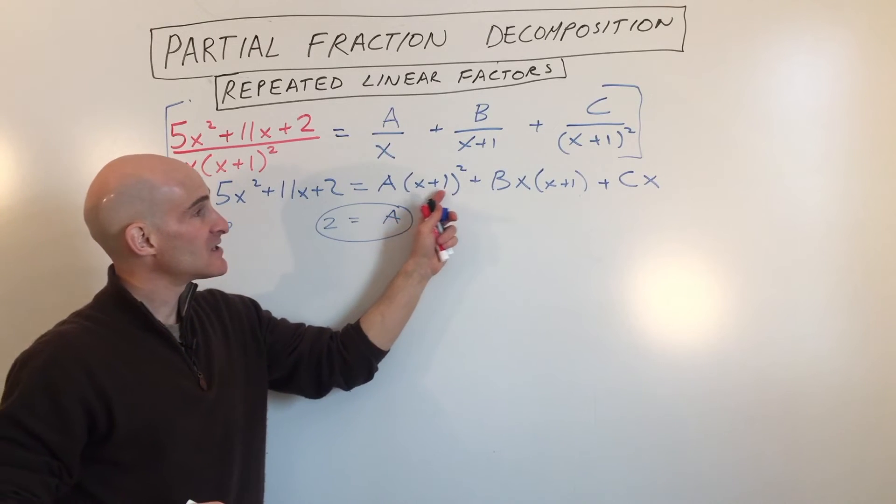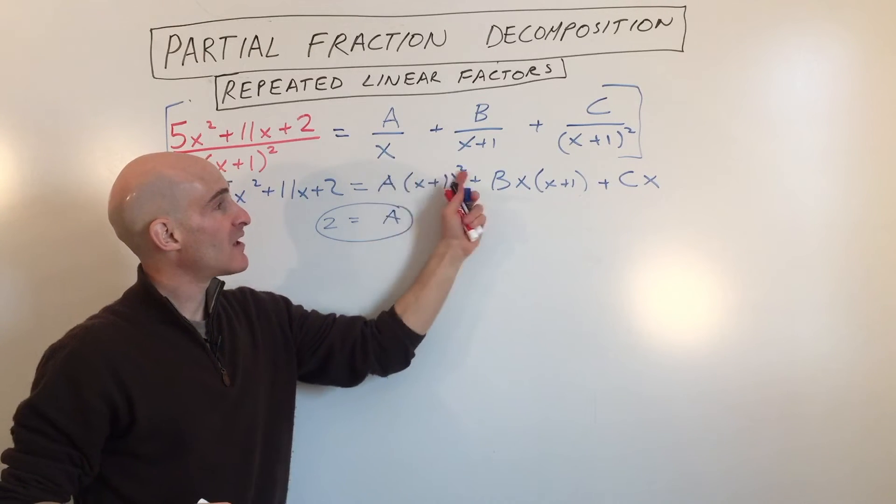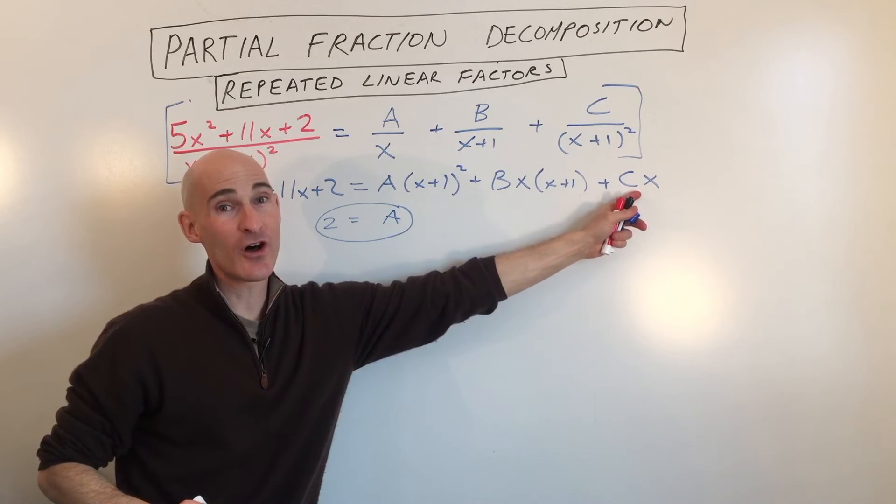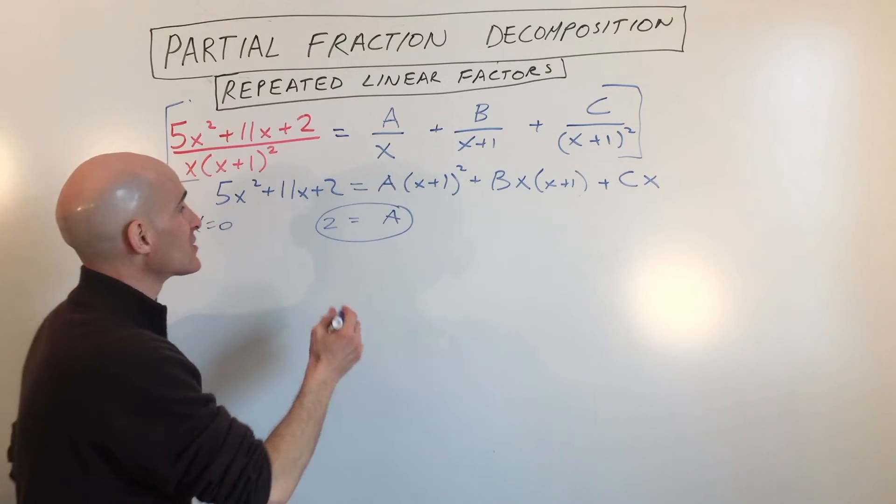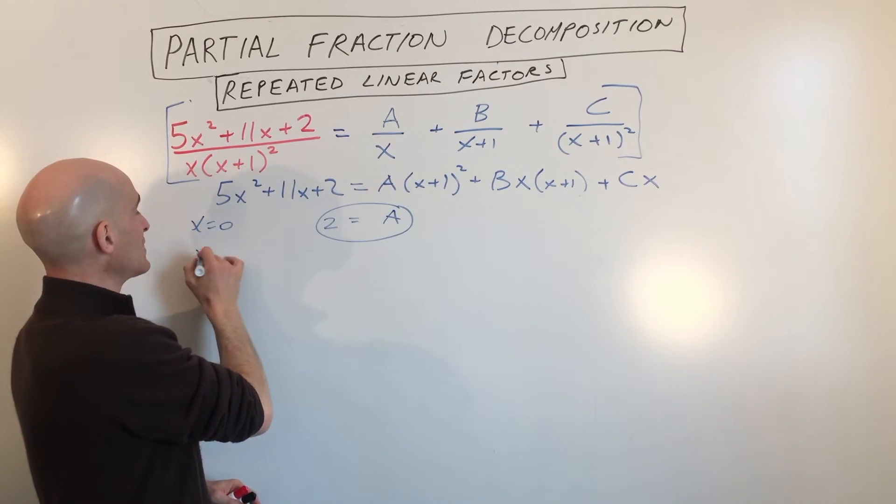Let's be strategic again. Let's set x equal to negative 1. That'll cancel out this term and this term. We'll be able to solve for C. Okay, so let's do that. So we put x equals negative 1.